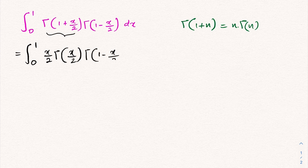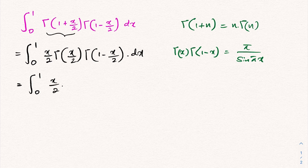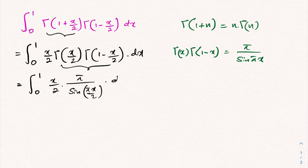Then we know about Euler's reflection formula: gamma of x times gamma of (1 - x) is equal to pi over sine of pi*x. So we can use Euler's reflection formula. Therefore we have the integral from 0 to 1 of (x/2) times pi over sine of (pi*x/2) dx.